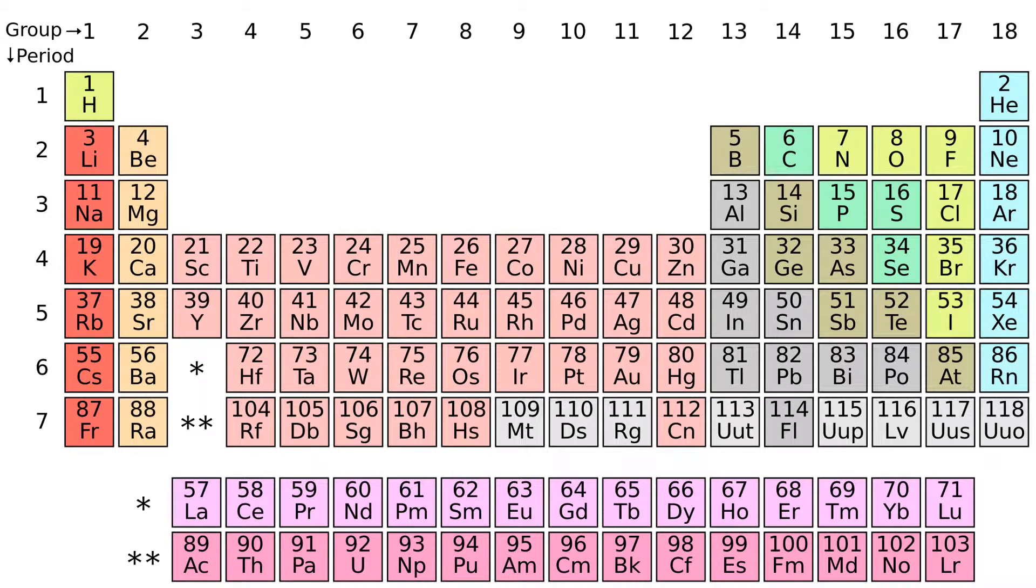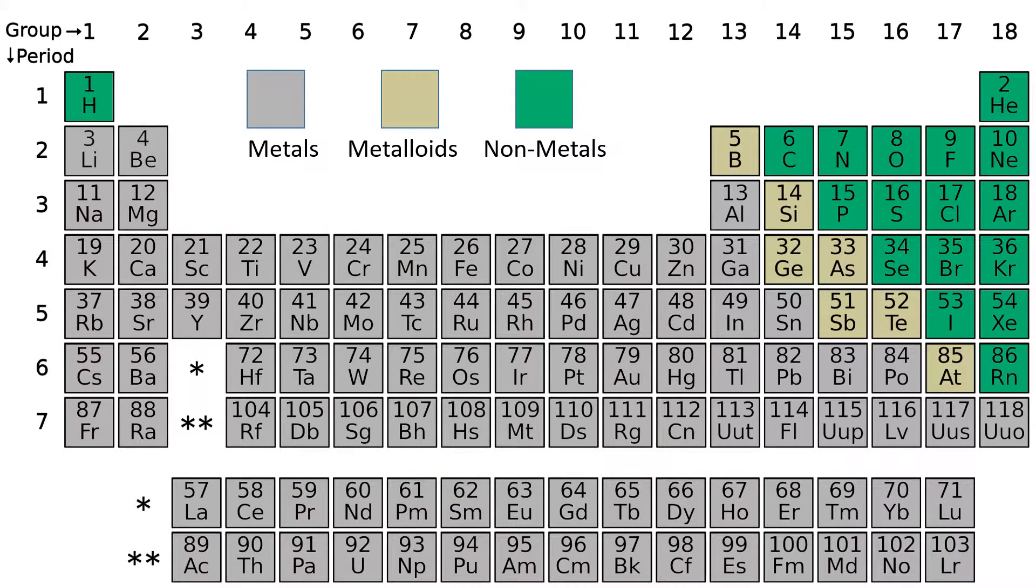An ionic bond occurs in a compound formed when a metal combines with a non-metal. Let's look at an example.